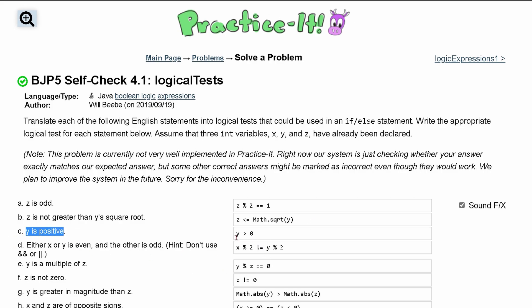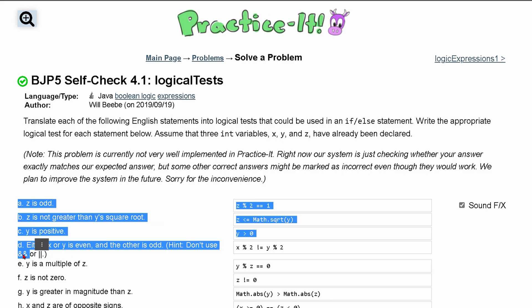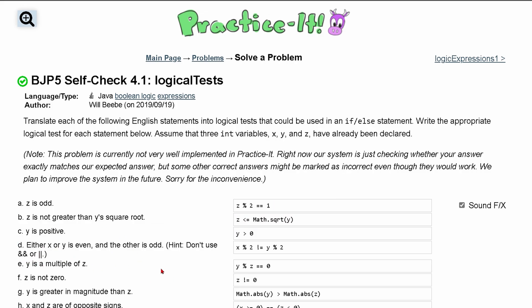We have to check if y is positive. This is a simple y greater than 0. For d, we either have x or y is even and the other is odd. And we don't want to use these ands or ors here. So how do we do this?